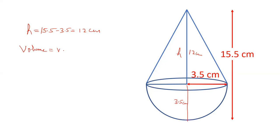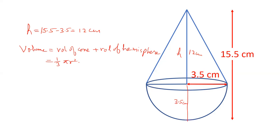Volume is equal to volume of cone plus volume of hemisphere. Volume of cone is equal to one-third pi r squared h. Volume of hemisphere is equal to two-thirds pi r cubed.